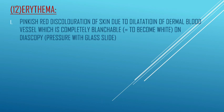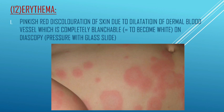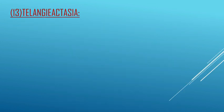Next is erythema — a pinkish-red discoloration of skin due to dilatation of dermal blood vessels, which is completely blanchable, meaning it becomes white on diascopy (pressure with a glass slide). The same blanching is seen in wheals, but wheals are edematous whereas erythema is not edematous.